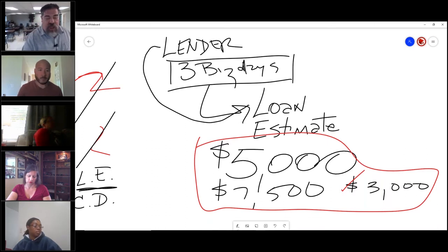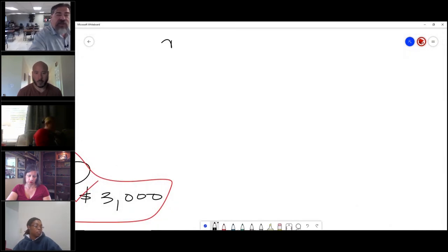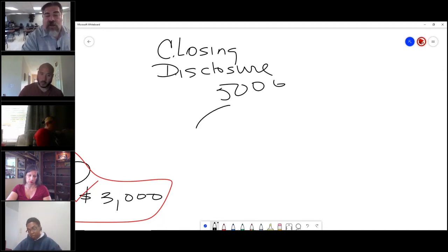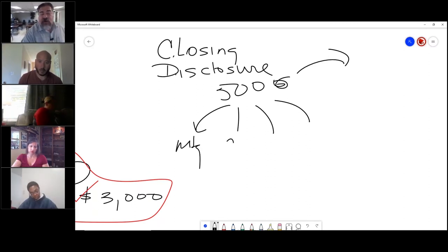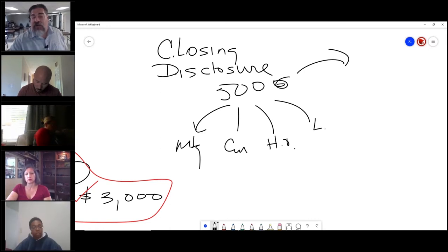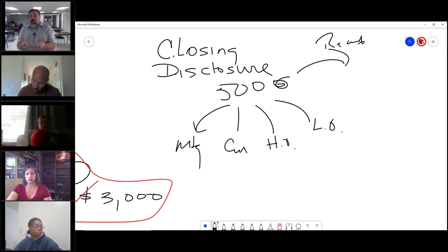And then when they get the loan and they go to close, they get to the second form, which is the closing disclosure, or the slang is the CD. This tells where all that $5,000 is going to - mortgage broker fee, courier fee, homeowner's insurance, loan origination fee, and recording fees. So the closing disclosure is the itemized list of the loan estimate.